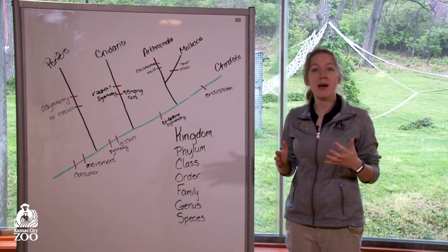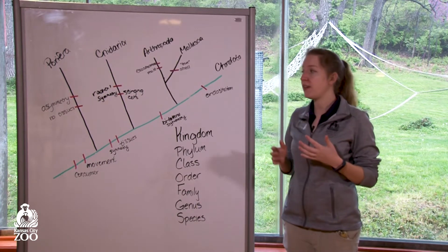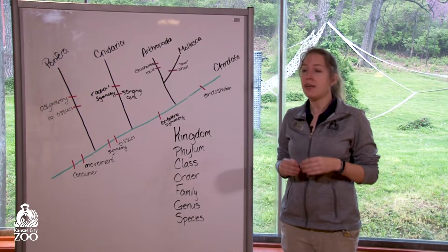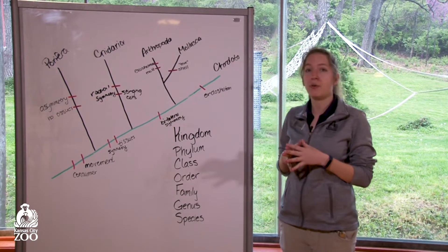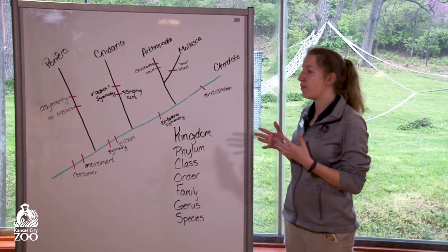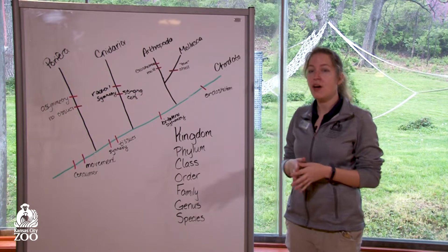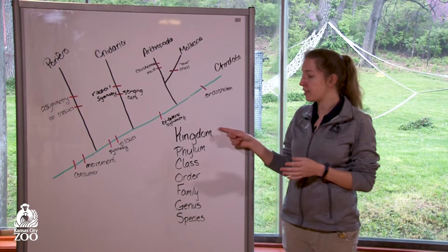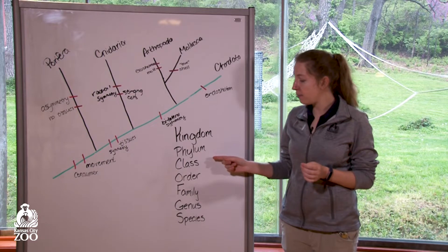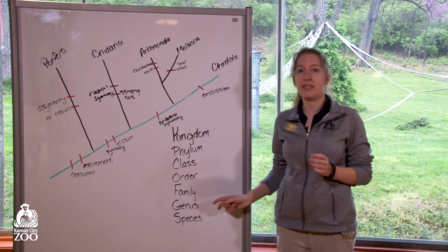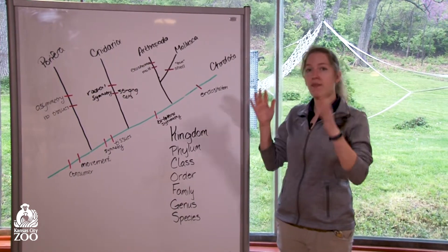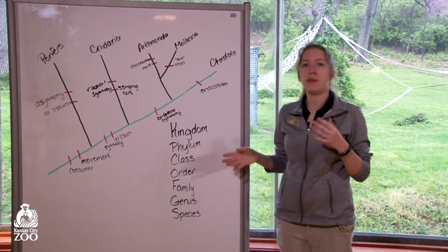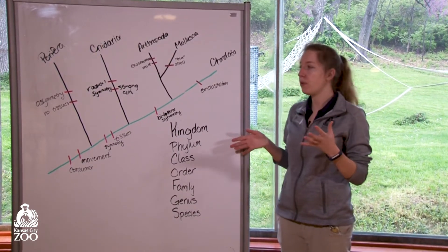As a recap of where we left off with classification: classification is a scientific tool scientists use to sort and group animals based off of common characteristics. Our taxonomy levels for classification are as follows: kingdom, phylum, class, order, family, genus, and species. You start off large and as you go further and further down our levels you get to be a little bit more specific.